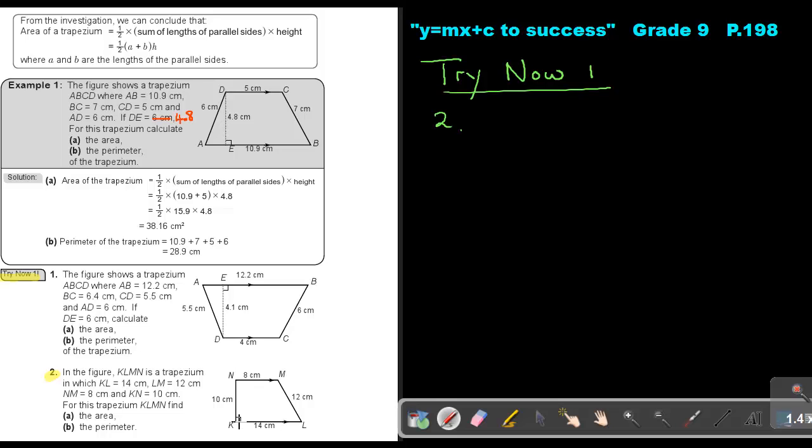in which KL is 14, LM is 12, NM is 8, and KN is 10. Now, find, for this trapezium KLMN, find the area. Now, maybe you're going to say, I don't have the height. One of the sides in this figure will be the height. So let's just mark it again.